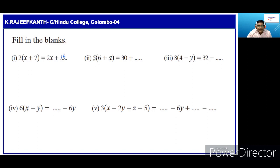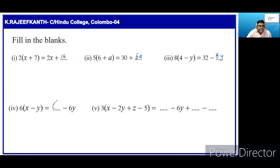Then here, 5 into 6 plus a. Then, 5 times 6 is 30. Then, 5 times a is 5a. The next one: 8 into 4 minus y. Then, 8 times 4 is 32. 8 times minus y is minus 8y. The next one: 6 into x minus y. Then, 6 into x is 6x, minus 6 into y is 6y.